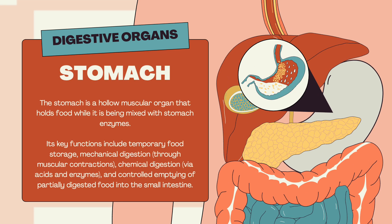The stomach is a hollow muscular organ that holds food while it is being mixed with stomach enzymes. Its key functions include temporary food storage, mechanical digestion through muscular contractions, chemical digestion via acids and enzymes, and controlled emptying of partially digested food into the small intestine.